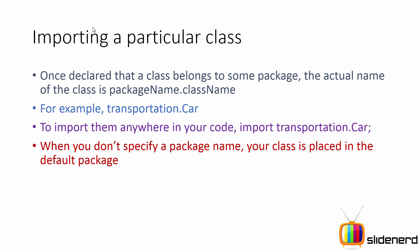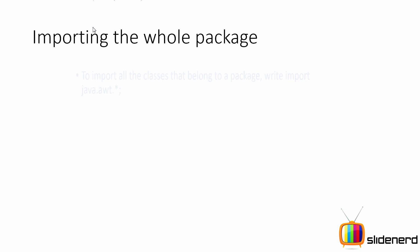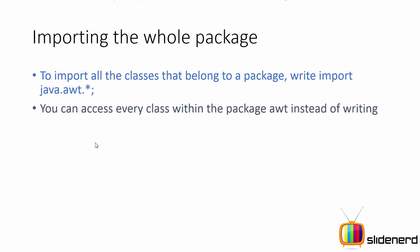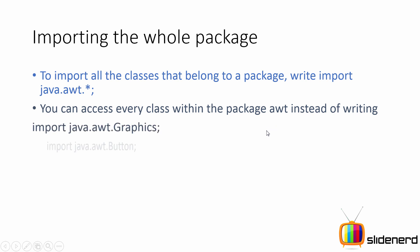When you don't specify a package name, your class is going to be placed in the default package. Now for importing the whole package, you could avoid a lot of trouble by saying something like 'import java.awt.*', which is nothing but the set of all the classes from the awt package — like button, checkbox, radio buttons and so on. This way you can access every class within the awt package instead of writing 'import java.awt.graphics', 'awt.button', and so on.